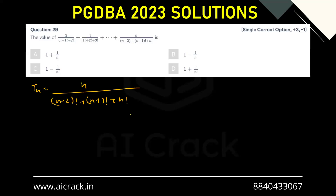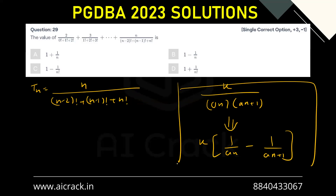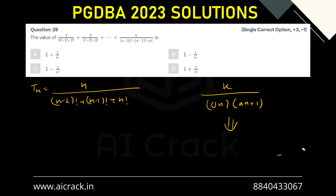A common method to solve these kinds of problems is to create a telescoping series. We try to write the general term in the form of k upon a_n multiplied by a_{n+1}, which can be written as k times 1 upon a_n minus 1 upon a_{n+1}. Basically, we have to create a product of two consecutive numbers in the denominator.